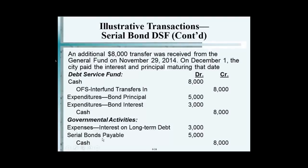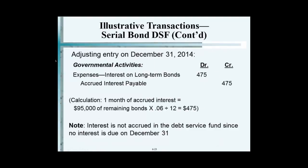Adjusting entry at the end of the year. Notice the accrual of interest on the full accrual basis — one month of accrual of interest. Interest is not accrued in the debt service fund since it's not due on December 31st. Important. And this is the closing entry that occurs.